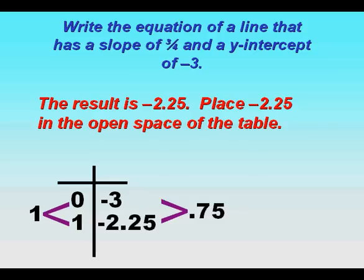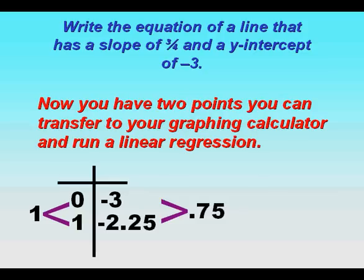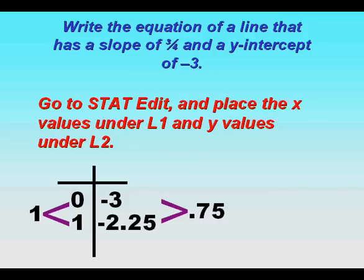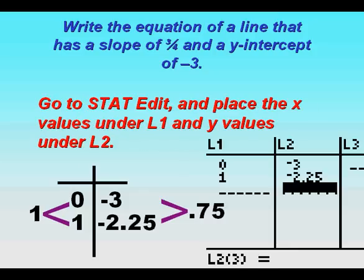And now we have two points we can transfer to our graphing calculator and run a linear regression. So we go to stat, edit, and place the x values of 0 and 1 under L1 and the y values of negative 3 and negative 2.25 under L2 as we've done here.